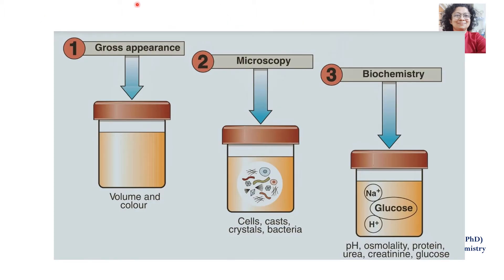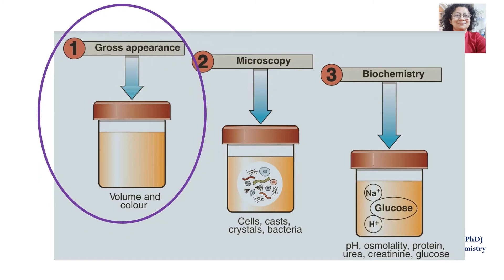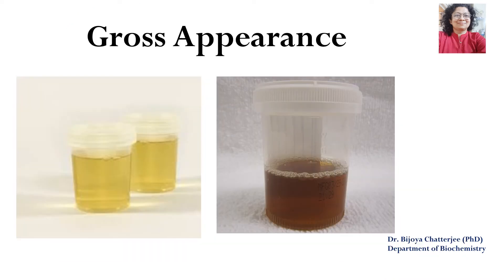Whenever we are examining urine, the first thing we examine is the gross appearance. If needed, it can be sent for microscopy to check for cells, casts, crystals, bacteria, and it is also sent to biochemistry for detection of various abnormal constituents. The microscopy aspect shall not be discussed here. When analyzing any body fluid, we first look at the gross appearance or physical characteristics, which include colour, odour, and appearance.